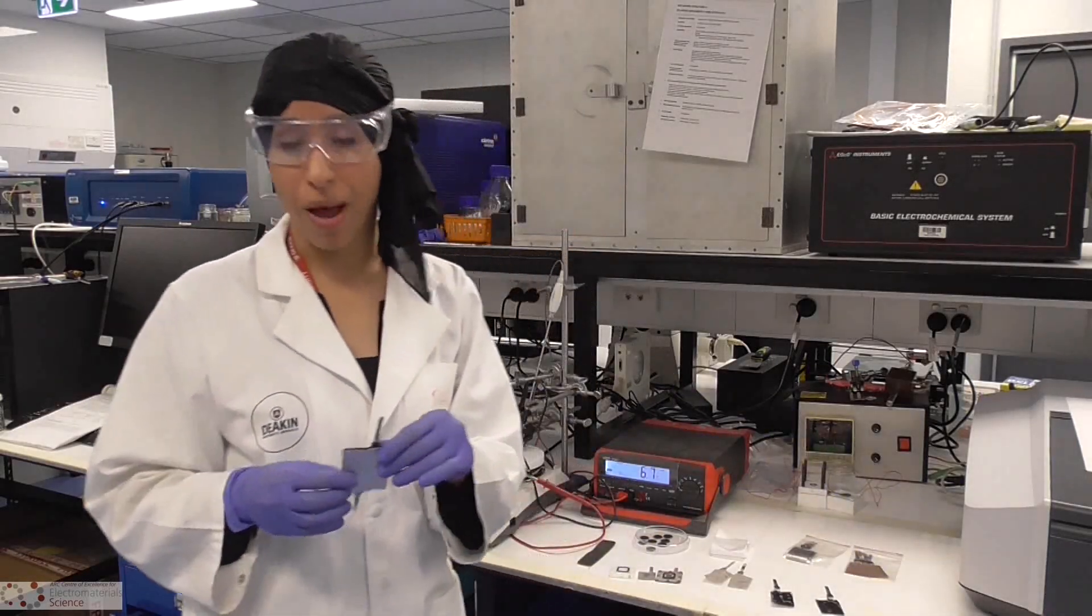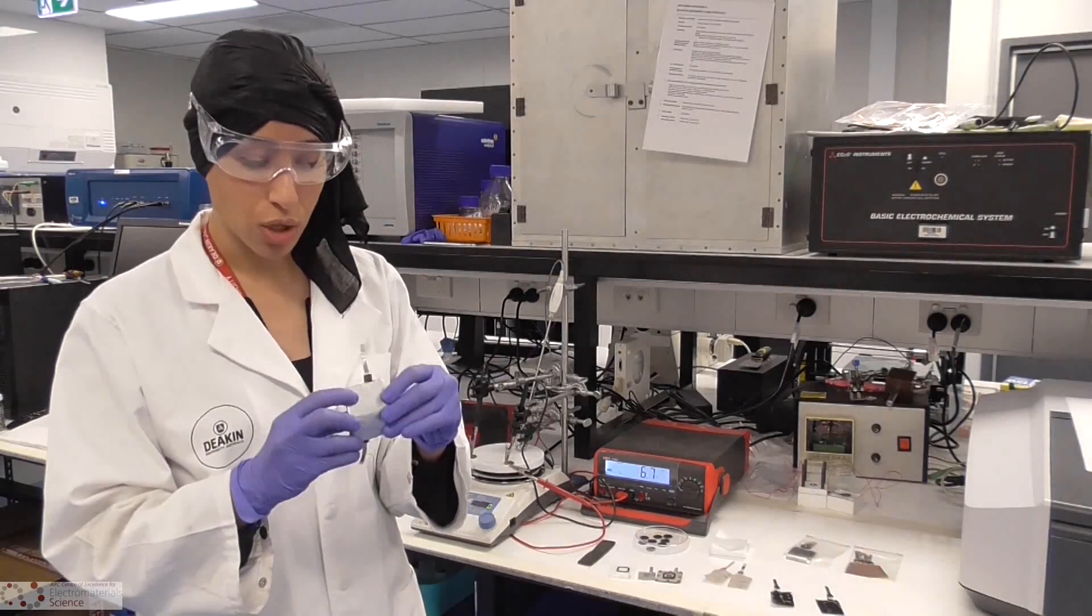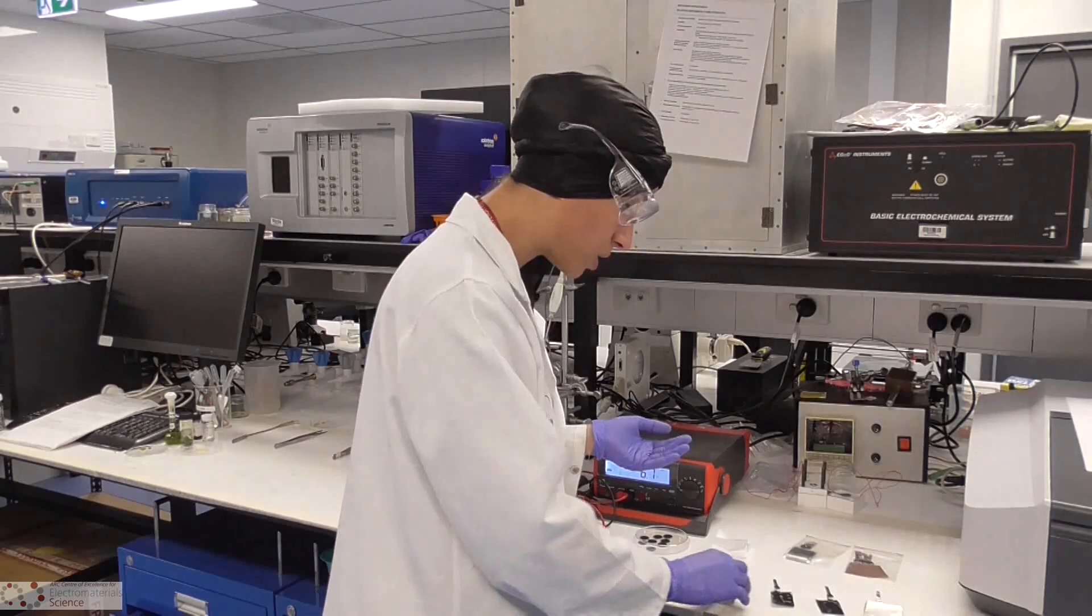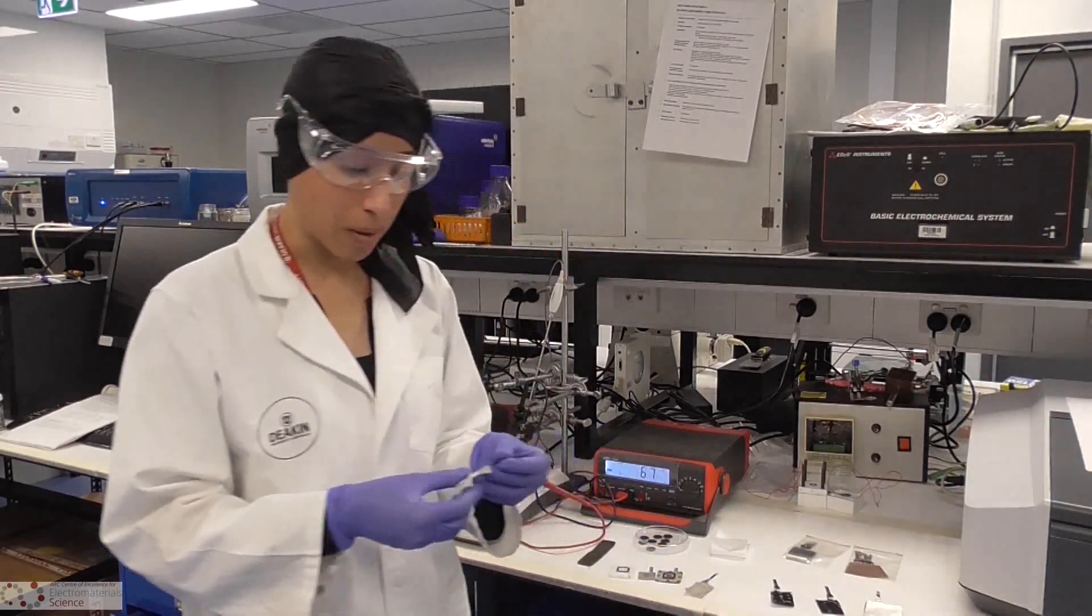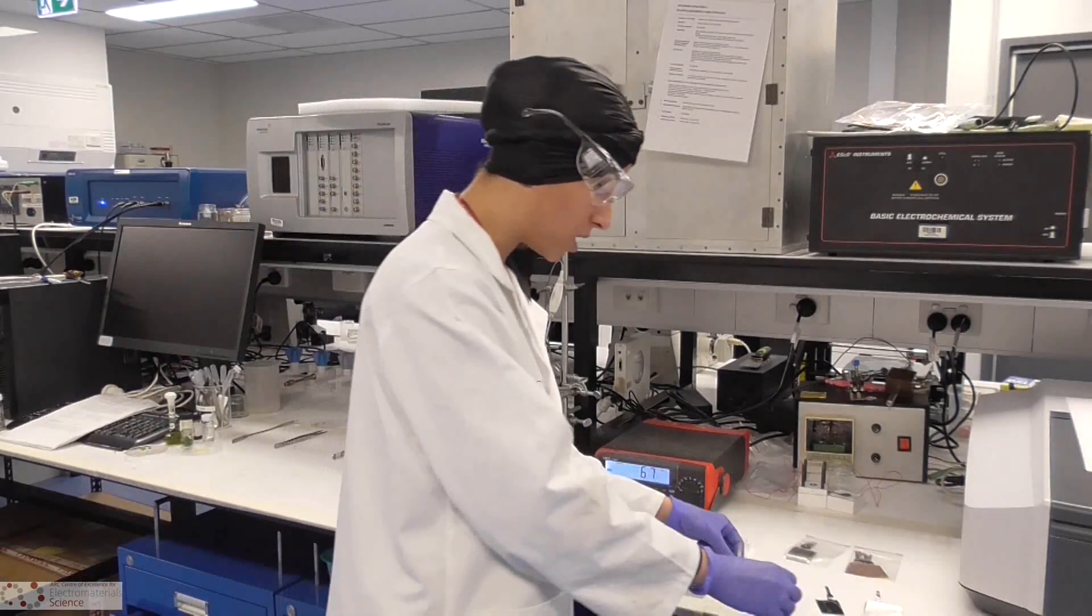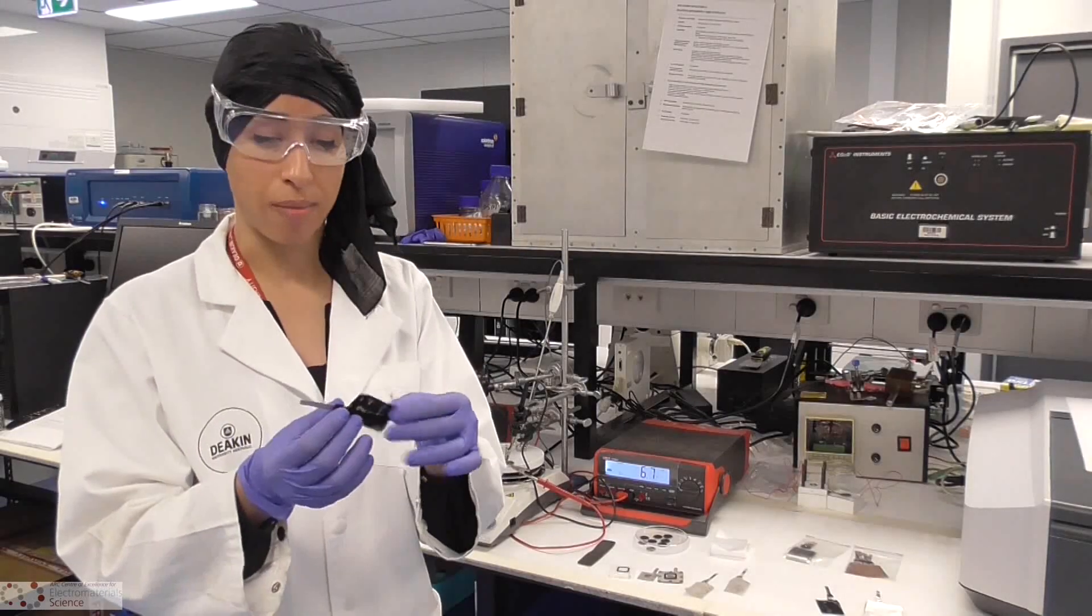Here we also have a pouch cell, which is a flexible device. Inside the pouch cell you get electrodes. In this particular one I'm using stainless steel mesh because it's quite cheap, but we coated it with a layer of carbon to improve its properties.